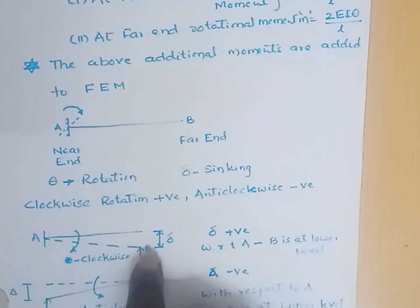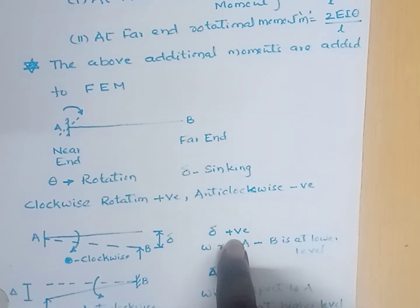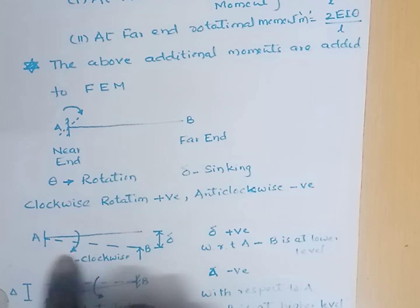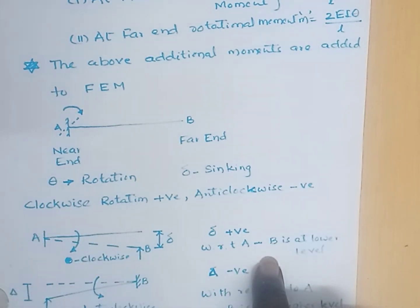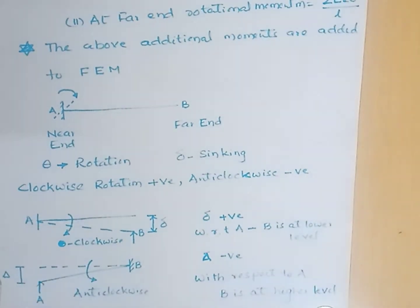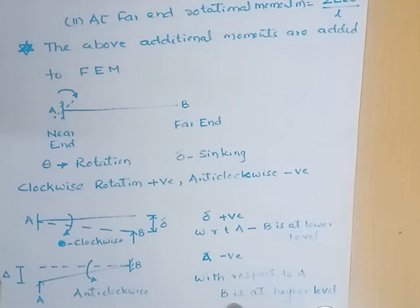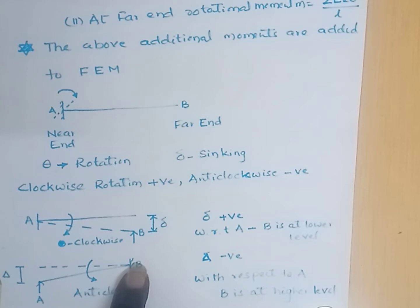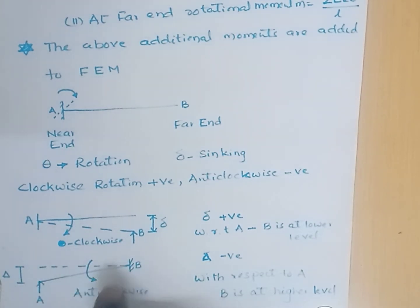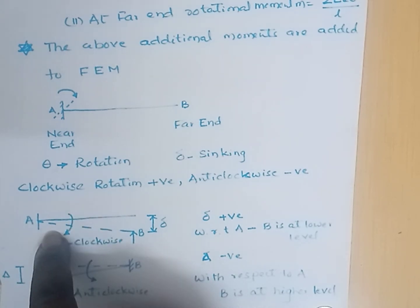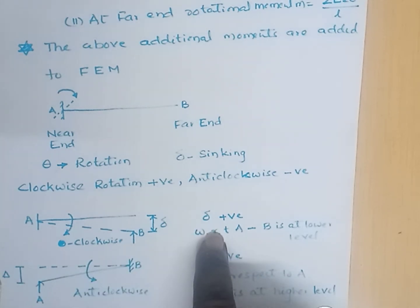If support B is at a lower level with respect to A and the chord rotation is clockwise, then delta is considered positive. In the next figure, if support A is at a lower level relative to B — meaning B is at a higher level — then delta is negative. In summary: if the span rotates clockwise with respect to horizontal, delta is positive; if anti-clockwise, delta is negative.